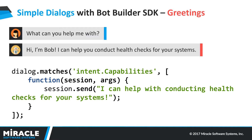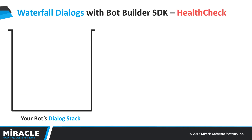So in this case, the user says, what can you help me with? LUIS understands that it's intent.capabilities, and your bot backend would then respond using the user session saying, I can help with conducting health checks for your system. Now in most cases this would be very good, but as we go into complex dialog flows where users have to be asked questions and validated for their answers, you need a lot more capability. So let's explore how the bot's dialog stack is maintained using a health check use case.